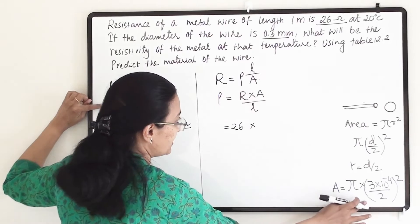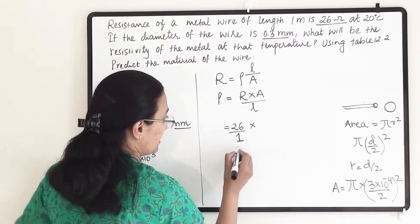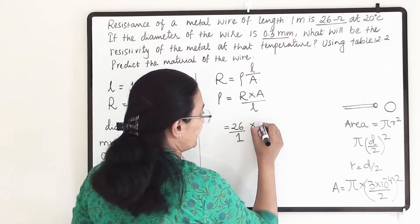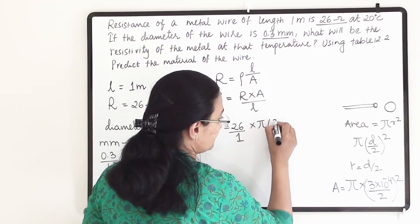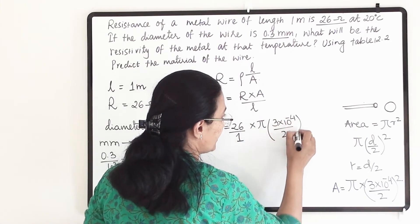Resistance we know is 26. Now A I am going to write last. First I write L that is 1. Now this full term will come here: pi with that 3 into 10 raise to minus 4 divided by 2, whole square.